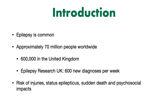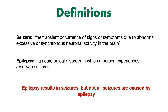Let's start off by considering some definitions. We can define a seizure as transient signs or symptoms which occur due to abnormal, excessive or synchronous neuronal activity in the brain. We can simplify this by simply saying that a seizure is when patients develop signs or symptoms due to abnormal electrical activity in the brain.